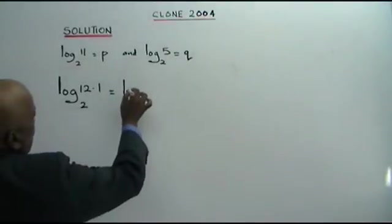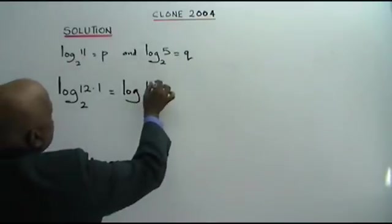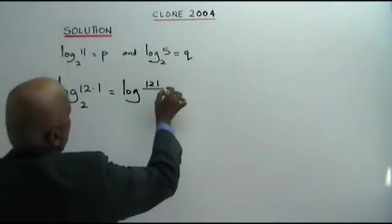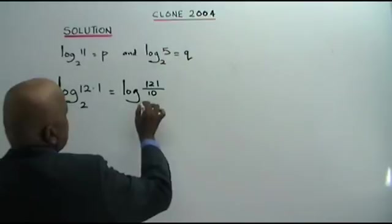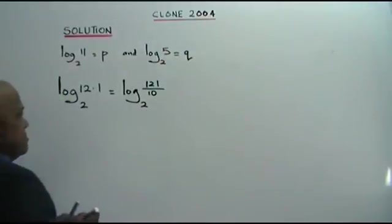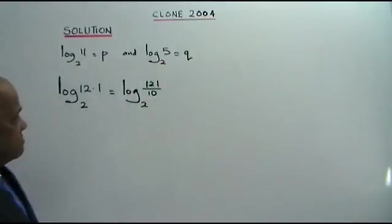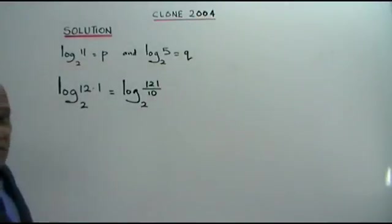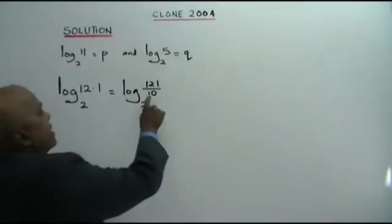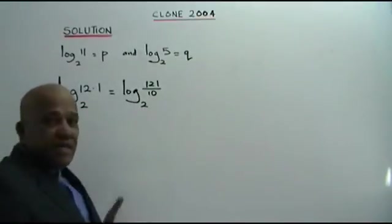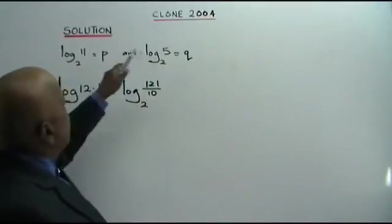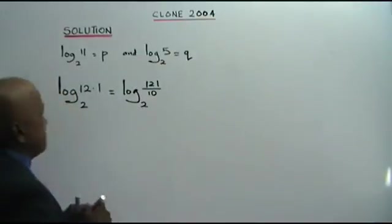This is equal to log 121 over 10 base 2. 121 over 10, that is 12.1. And what is 10? 10 is 5 times 2.